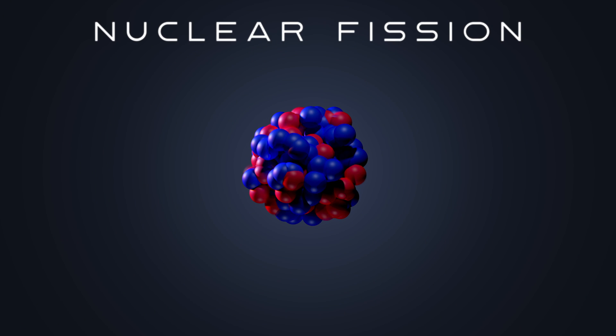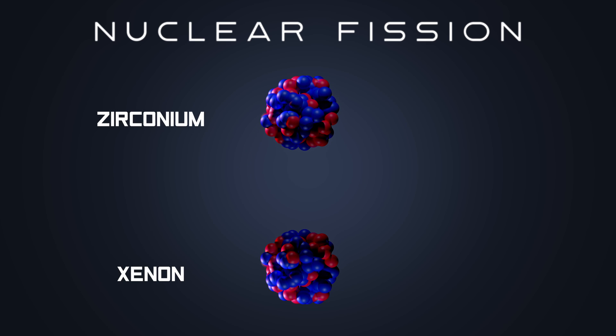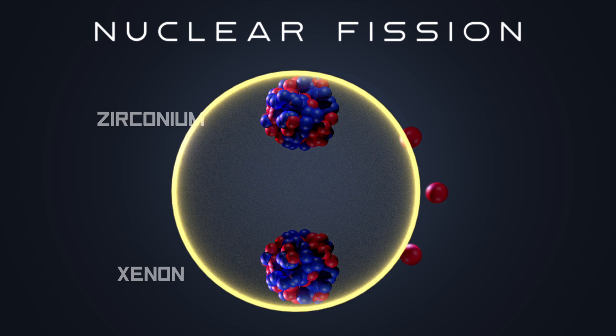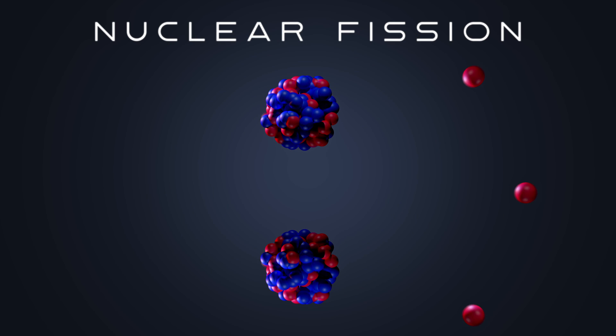This is a stable plutonium atom. When this atom got struck by a neutron, it becomes unstable, and splits into two small atoms, zirconium and xenon. And also neutrons and energy is released during this process. This splitting of atom is called nuclear fission.